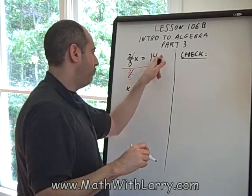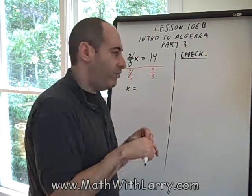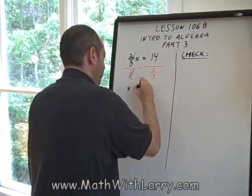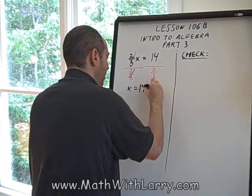Now, look at what we have on the right. As messy as it looks, we have 14 divided by 2/3. Let's write that in a more standard and clean way. I'm going to write 14 divided by 2/3.